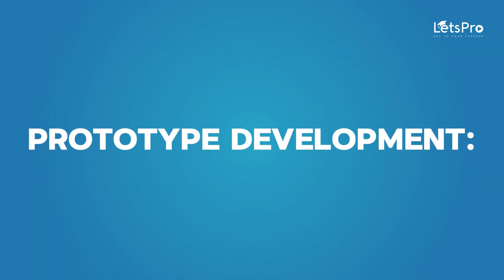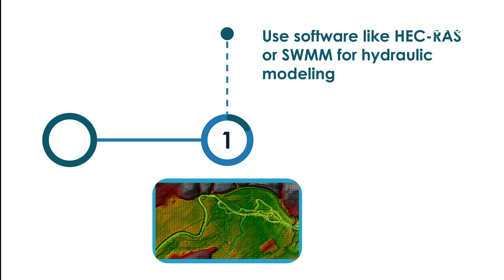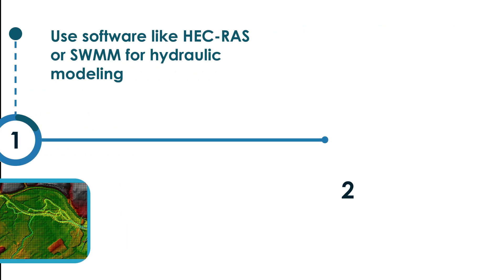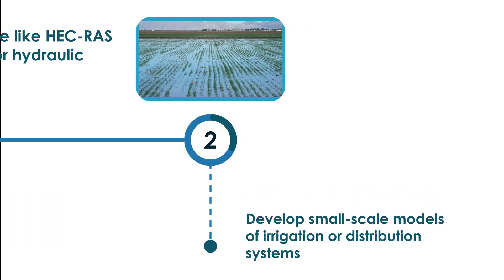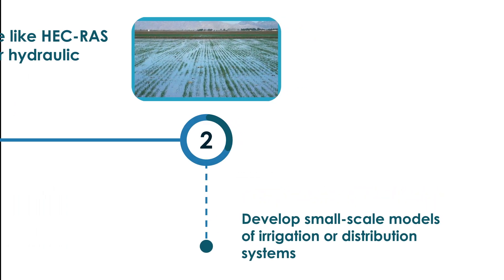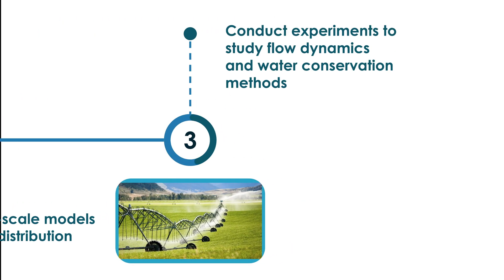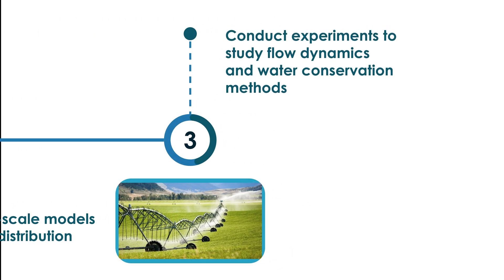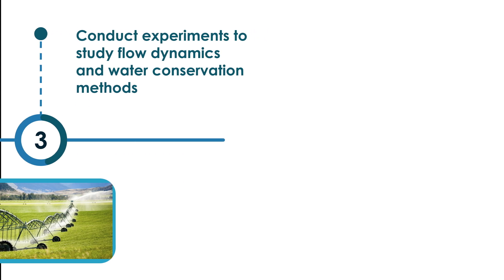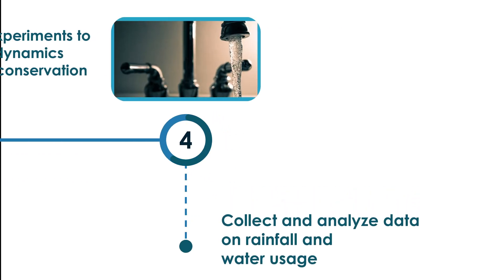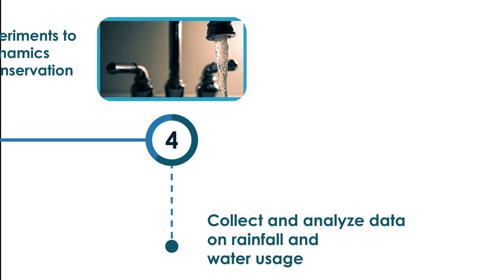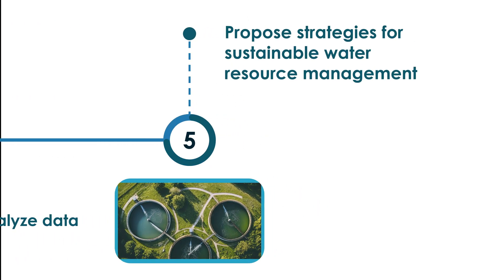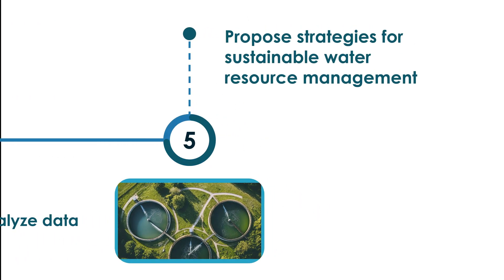For prototype development, use software like HEC-RAS or SWMM for hydraulic modeling. Develop small-scale models of irrigation or distribution systems. Conduct experiments to study flow dynamics and water conservation methods, collect and analyze data on rainfall and water usage, and propose strategies for sustainable water resource management.